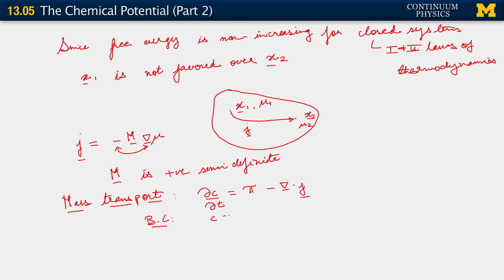Boundary conditions are c equals c bar on the concentration boundary or the Dirichlet or essential boundary. And we have minus j dot n equals j bar on the natural boundary. We have an initial condition which is that c equals c naught at time t equals 0.